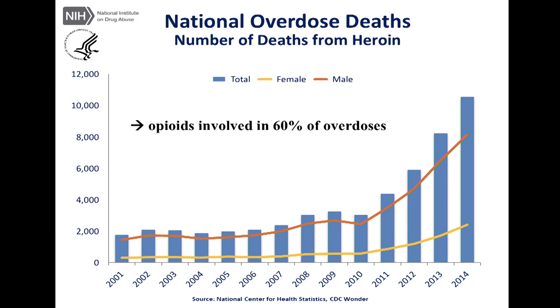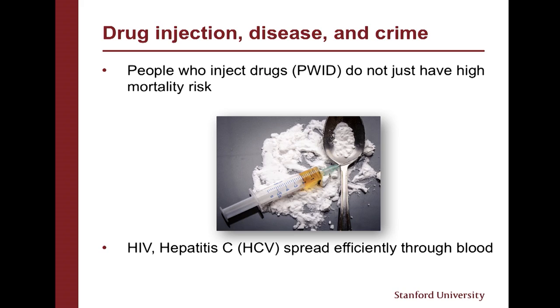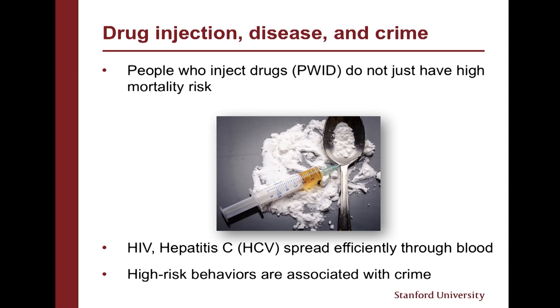We're really at the level here where we consider this a national epidemic — this is a public health crisis. People who inject drugs are not just at high risk for mortality; they also have high morbidity risks. Blood-borne illnesses like HIV and hepatitis C spread very efficiently through contact with blood, so there's a high prevalence in injecting communities. A lot of high-risk behaviors associated with injecting are commonly correlated with criminal activity, and many individuals become locked into cycles of incarceration, drug abuse, and disease transmission.